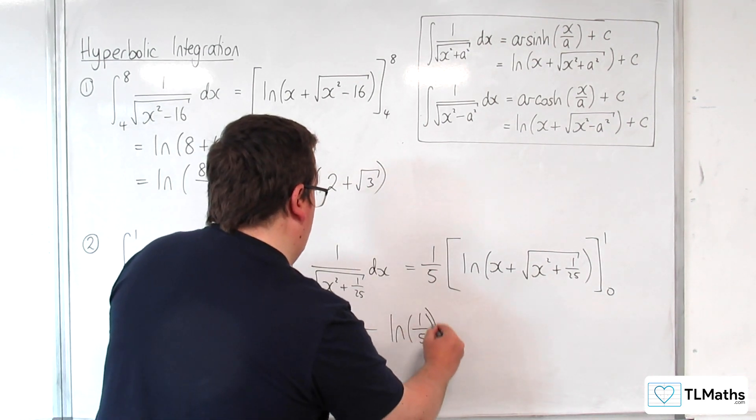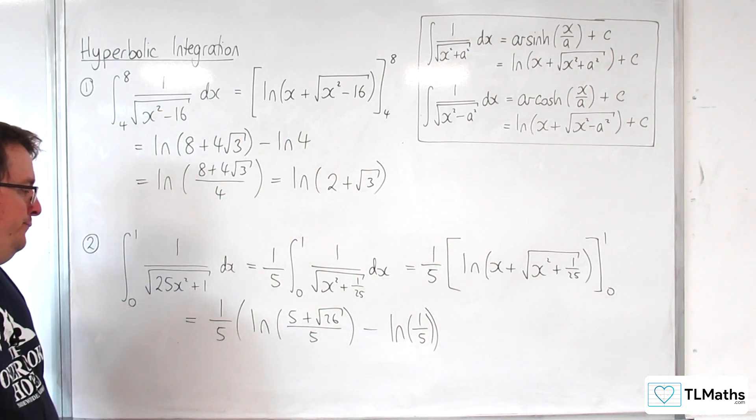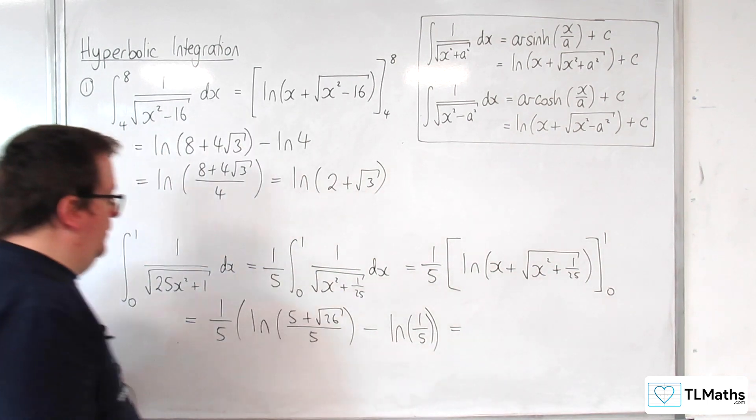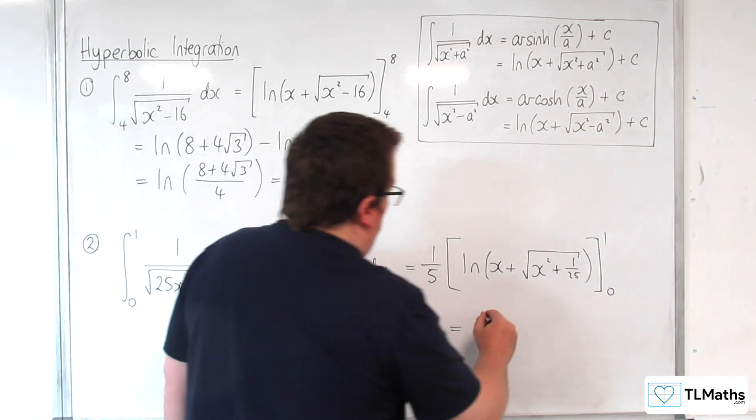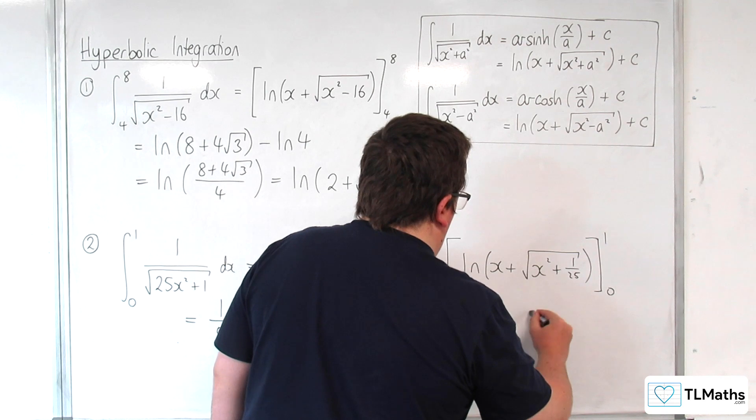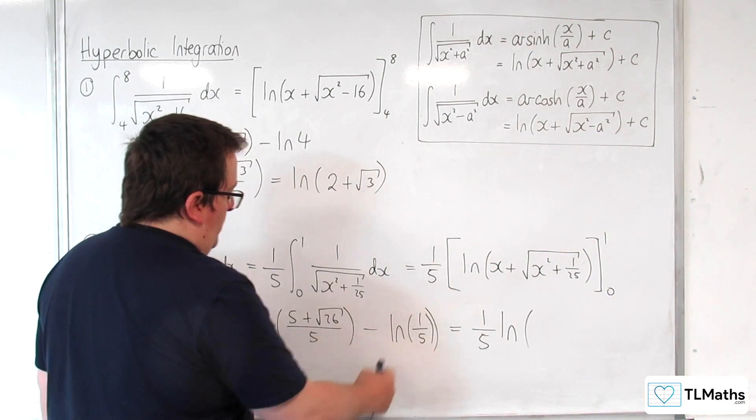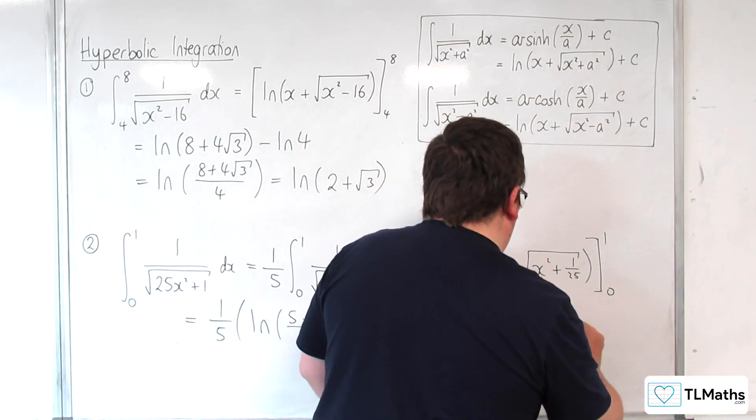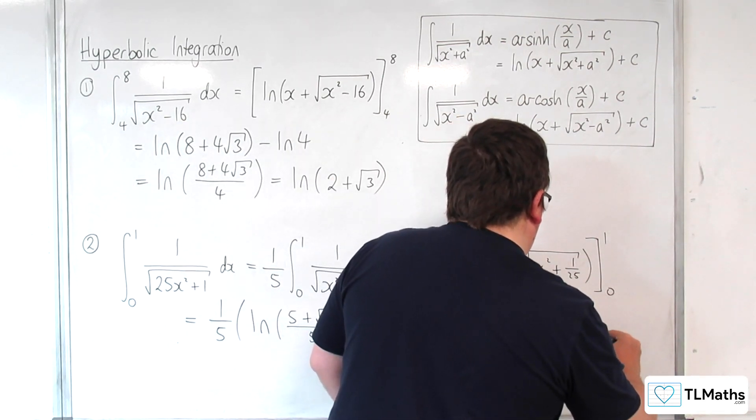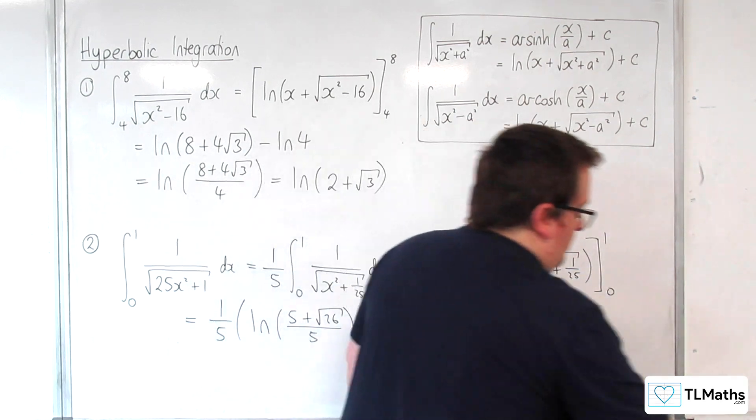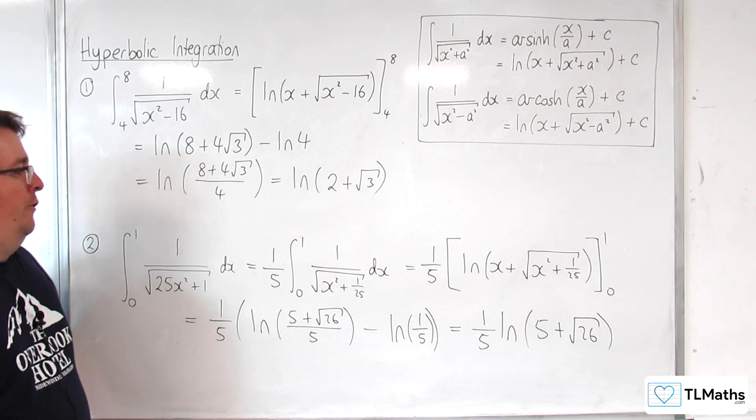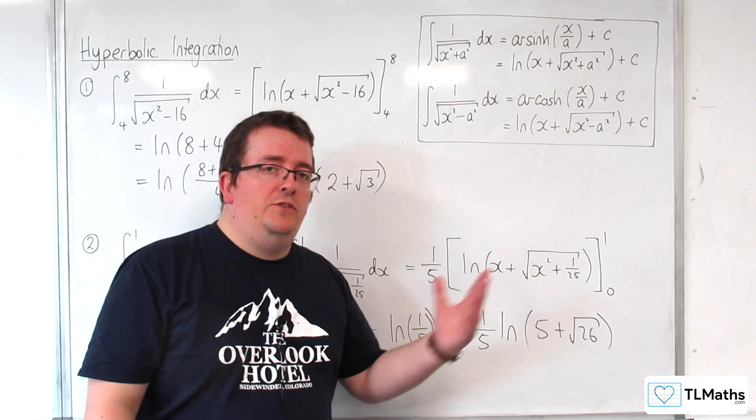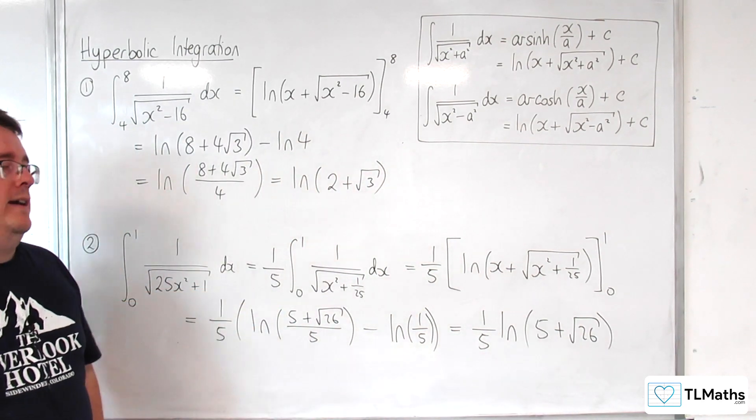Let's put that in an extra bracket so it's not confusing. This is going to equal 1 fifth times the natural log of that divided by 1 fifth, which is 5 plus root 26. And so that is the exact form of the answer we're looking for. You could bring the fifth up into the power, but it's not really going to make it any neater, so I would leave it like that.